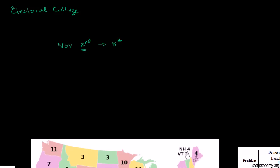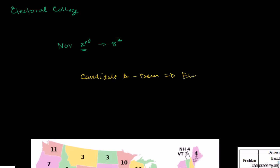When you go on election day, you'll see a ballot with the presidential candidates, their parties, and the vice presidential candidates, and you'll vote for one of them. But in actuality, when you are voting for candidate A — say candidate A is a Democrat — you're not actually voting for candidate A. You're actually voting for a slate of electors who promise to vote for that candidate.